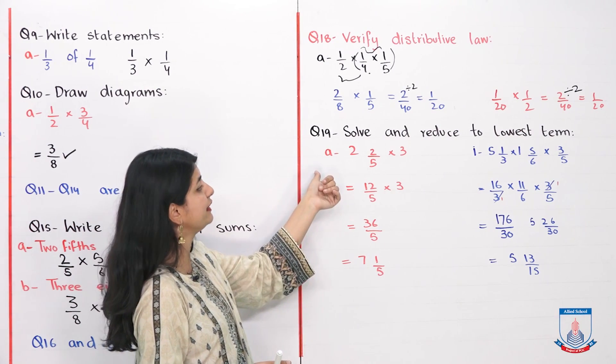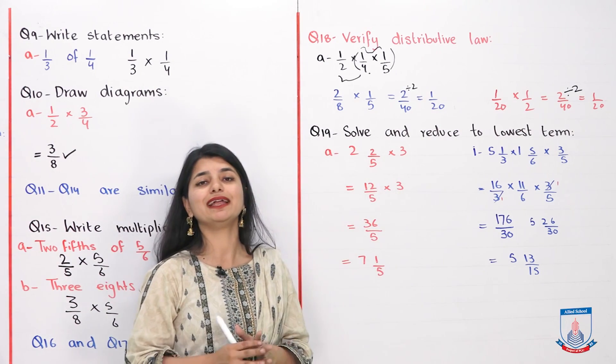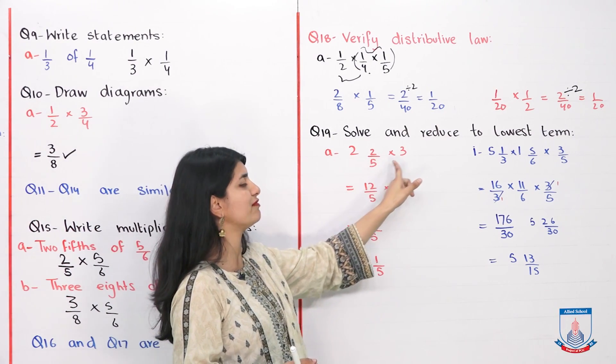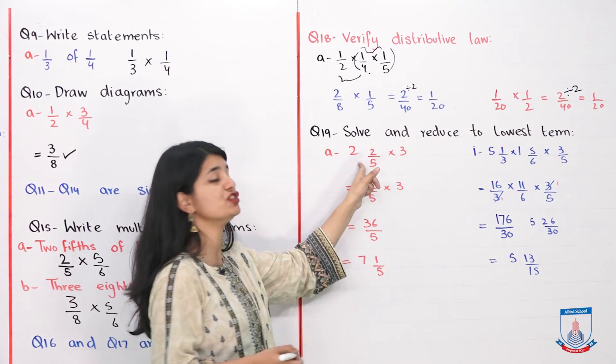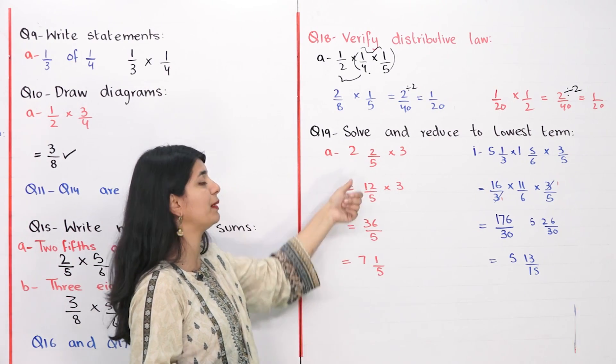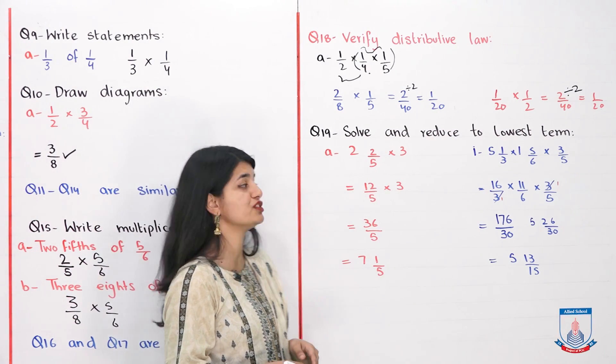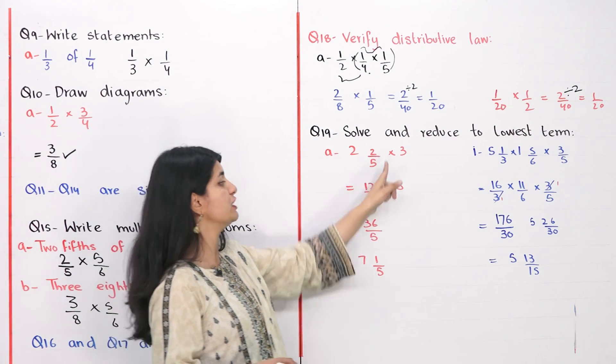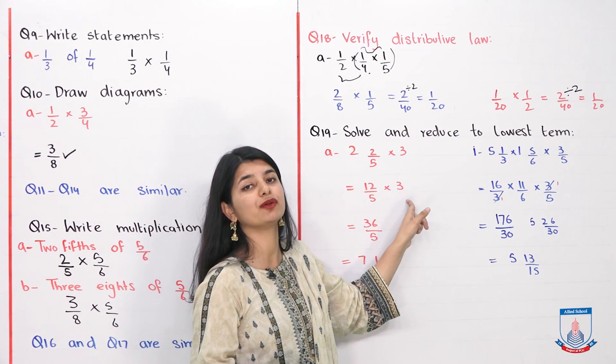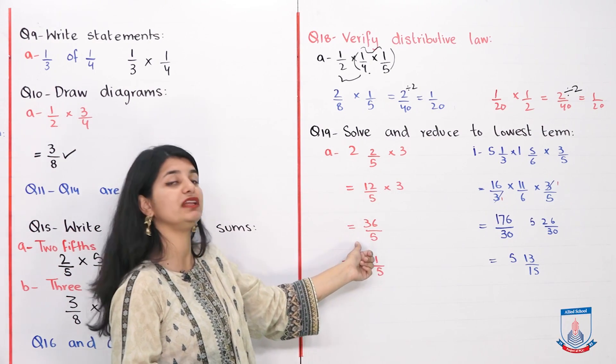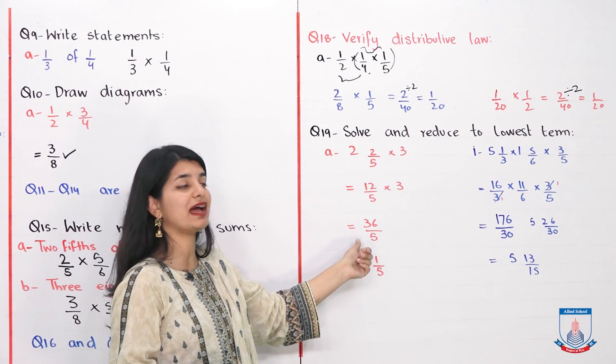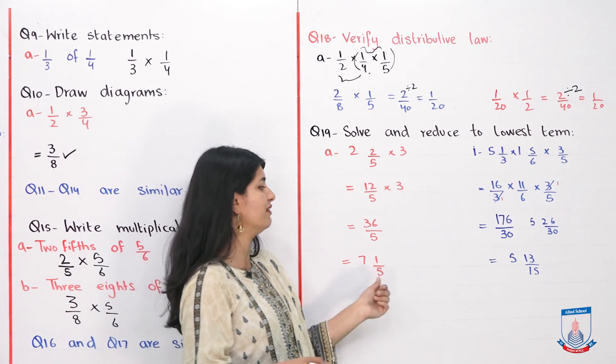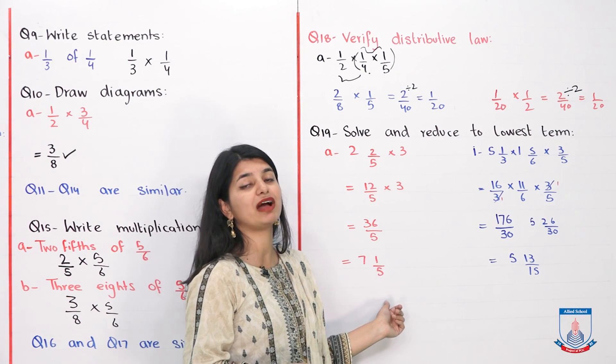Question number 19. Solve and reduce to lowest terms. There is nothing new but we will do a lot of practice. If you see this part, 2 whole 2 by 5 into 3. We have mixed fractions. We will make them improper for multiplication. 5 into 2, 10 plus 2, 12 over 5 is your fraction. You will multiply this by 3. 12 into 3, what is 36? And 5 is down. When you have 5, divide them. 5 is 7 whole number. You have 35. 1 remainder is 1 over 5. This is your answer.